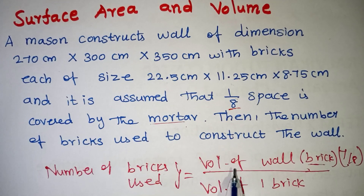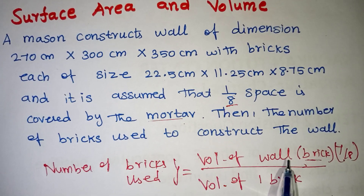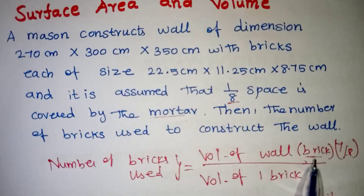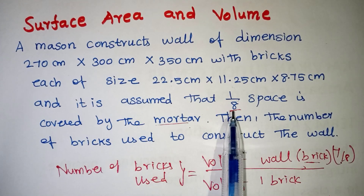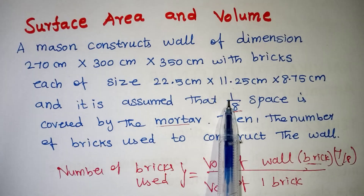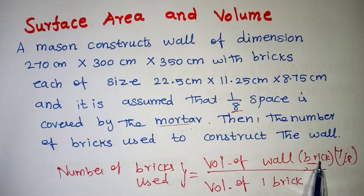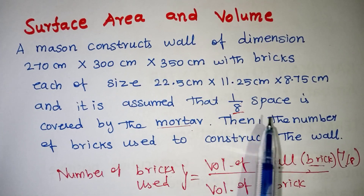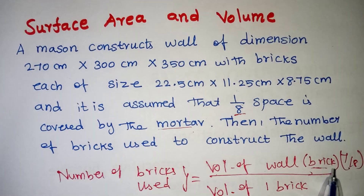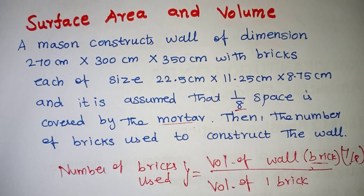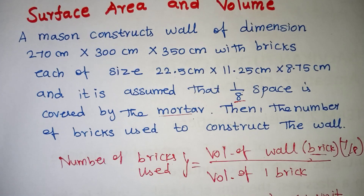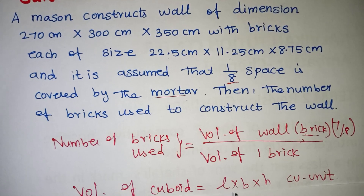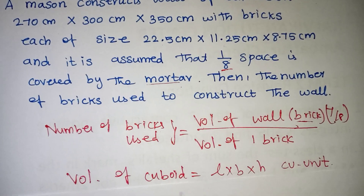Let's use the volume of the wall. We can use the brick volume. Out of 8 parts, 1 part is mortar, and we can use 7 parts for brick. So the brick fills 7/8 of the wall. The volume of a cuboid is equal to the formula: L into B into H cubic units. This is the basic formula.